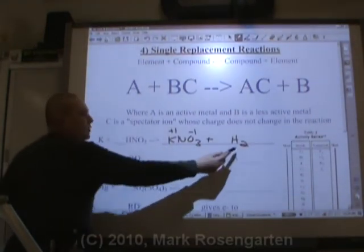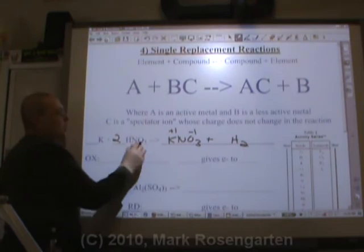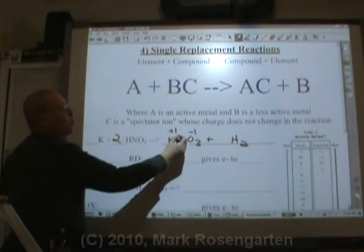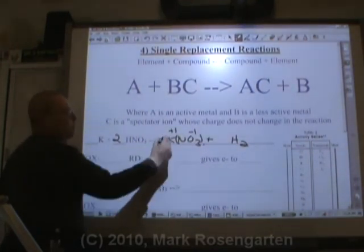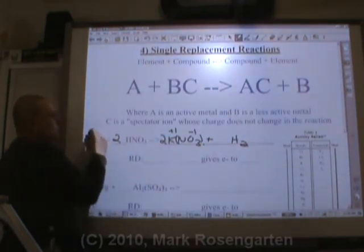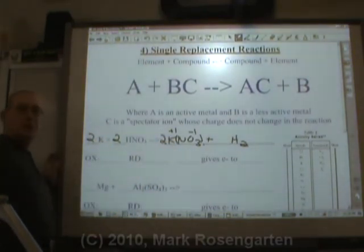Now let's balance it. One K, one K. One H, two H's. Two nitrates, one nitrate. So we put a two in front to balance it, which means we need to put a two in front of the K as well. Properly balanced and completed, single replacement reaction.